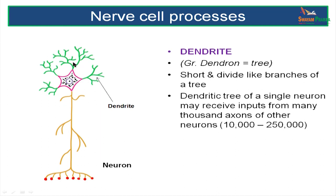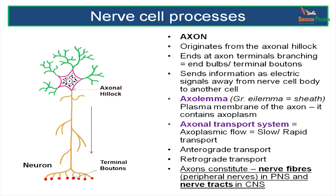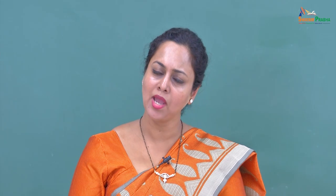Dendron means tree and dendrites are short like tree branches — they receive impulses from the periphery or from other neurons and can receive as many as 10,000 to 250,000 impulses from other axons or neurons. The axon is a long slender process which carries impulses away from the nerve cell body. The axon has an axolemma which is a covering sheath or plasma membrane. There is an axonal transport system having an anterograde flow and a retrograde flow. The nerve fiber in the peripheral nervous system is basically the axonal fiber, forming nerve tracts in the central nervous system.